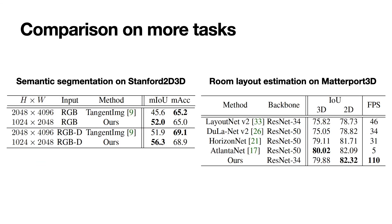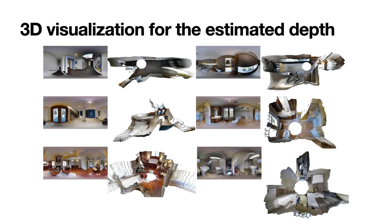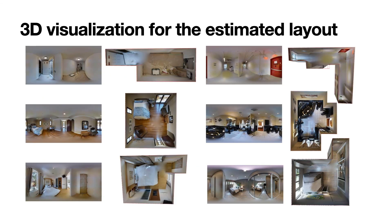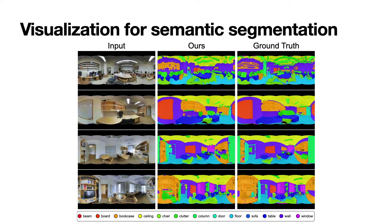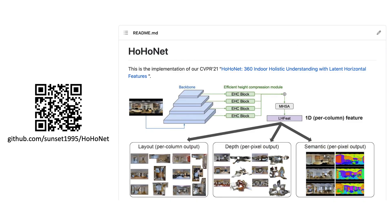Comparing to previous state-of-the-art on 360 semantic segmentation, we achieved much better mean intersection over union with competitive mean accuracy. On room layout estimation, HohoNet achieved competitive results but with much faster inference speed. Finally, we show some more visualizations by HohoNet on pixel-level depth estimation, room layout reconstruction, and semantic segmentation. Please check our paper for more details. Our code is released supporting custom data and experiment reproduction.